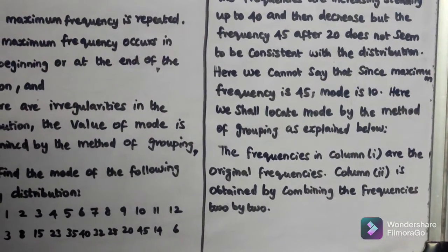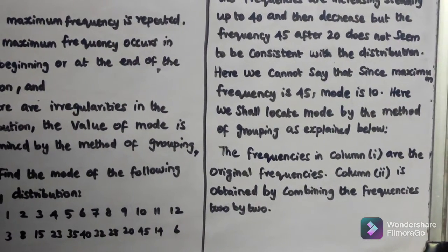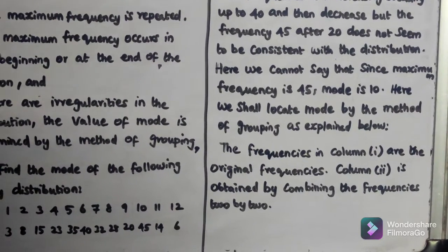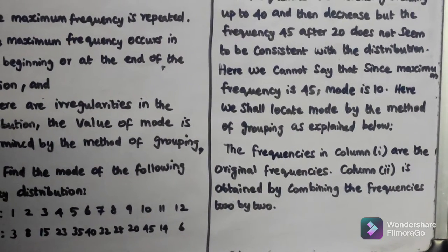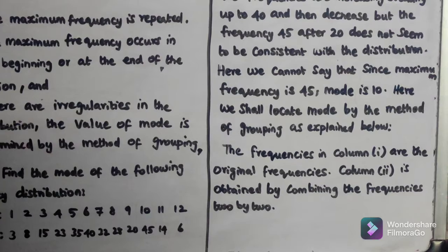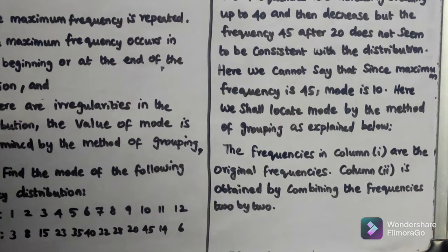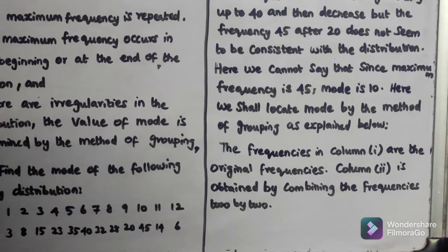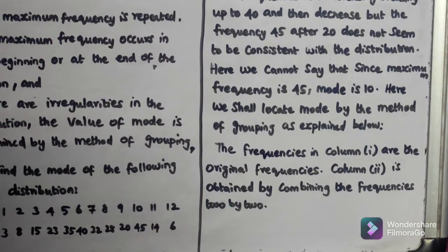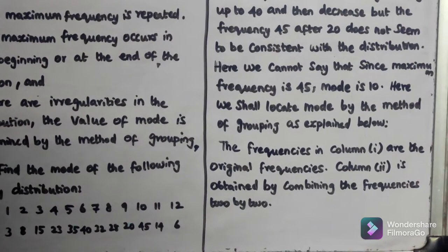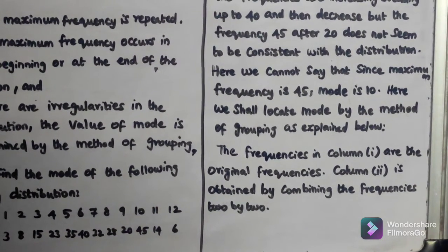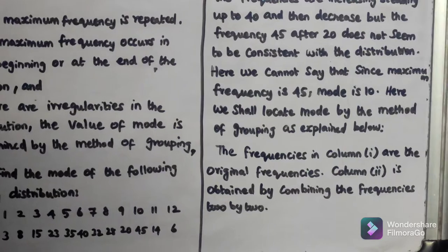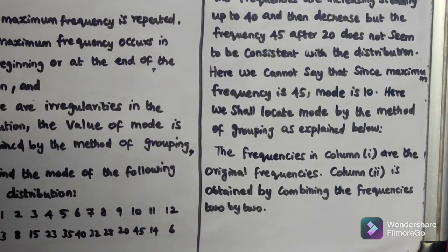Grouping method: In column 1, we use the original frequencies. In column 2, we combine the frequencies two by two. We compare the original frequency first, then the second column combines frequencies two by two.